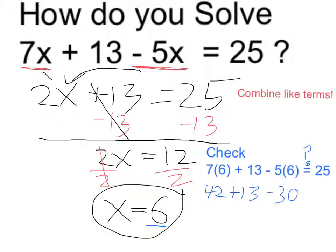42 plus 13 is equal to 55, and 55 minus 30, yes, that is going to equal 25. So I have verified now that x equals 6 is the correct answer.